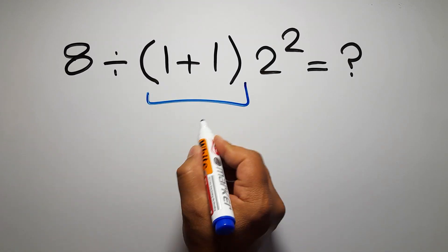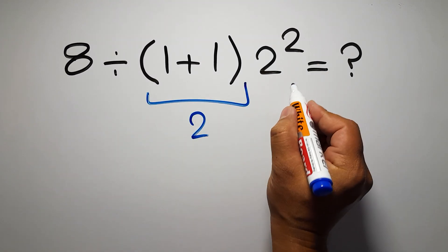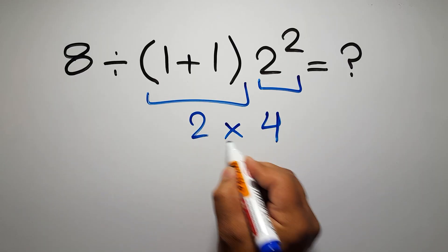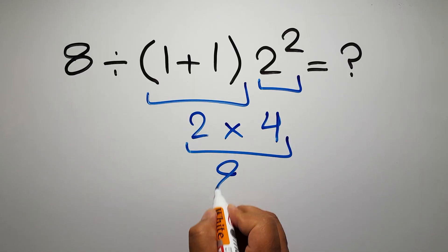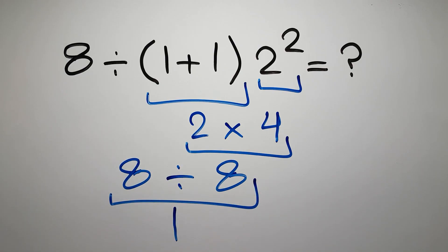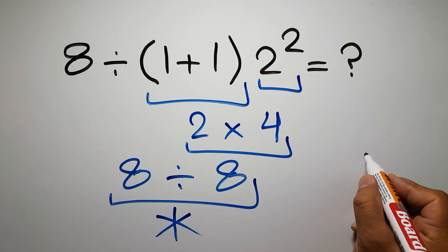1 plus 1 gives us 2, and 2 squared is just 4, so 2 times 4 gives us 8. And 8 divided by 8 equals 1, but this answer is not correct because according to the order of operations...